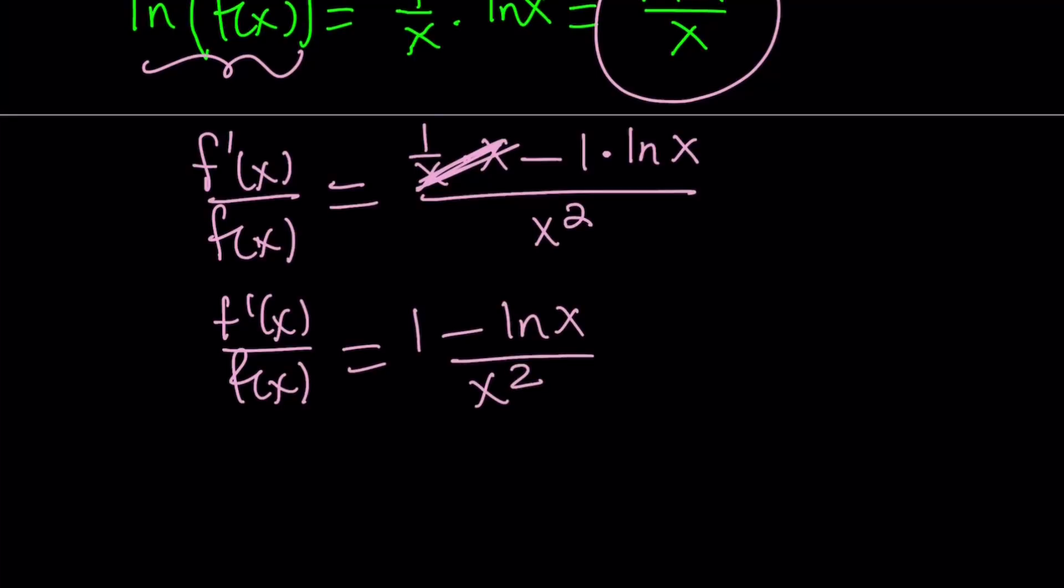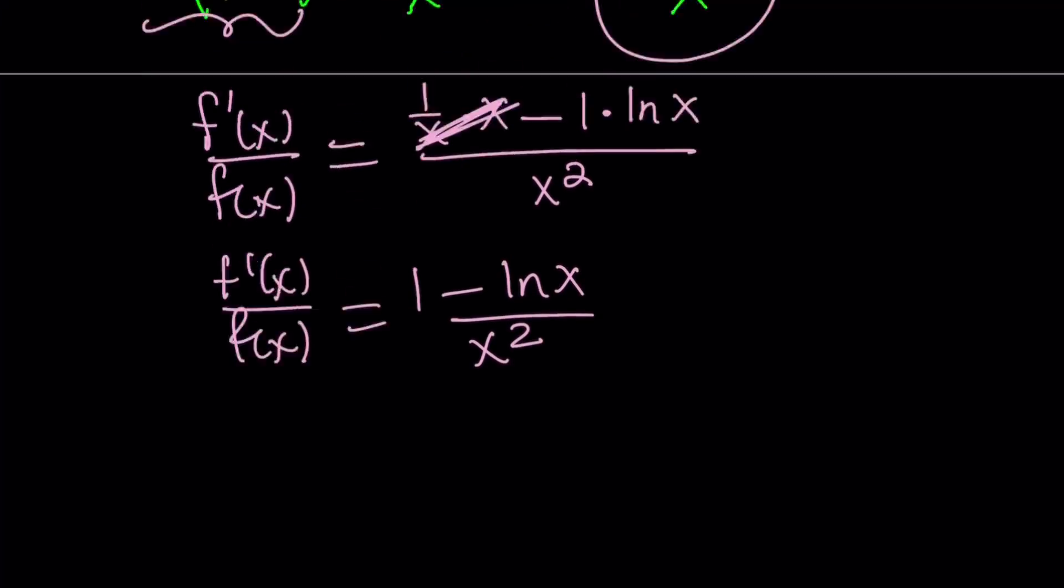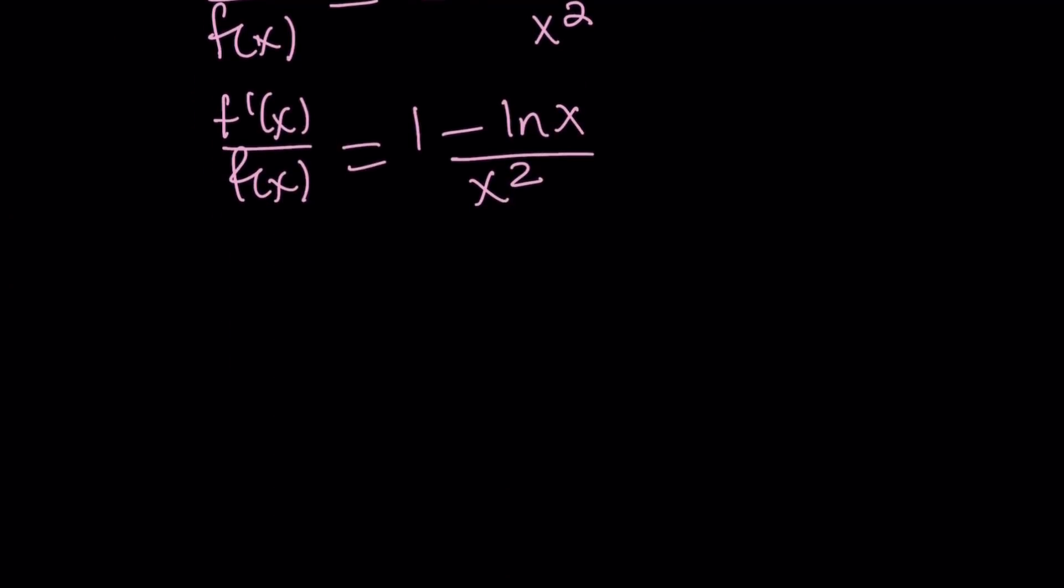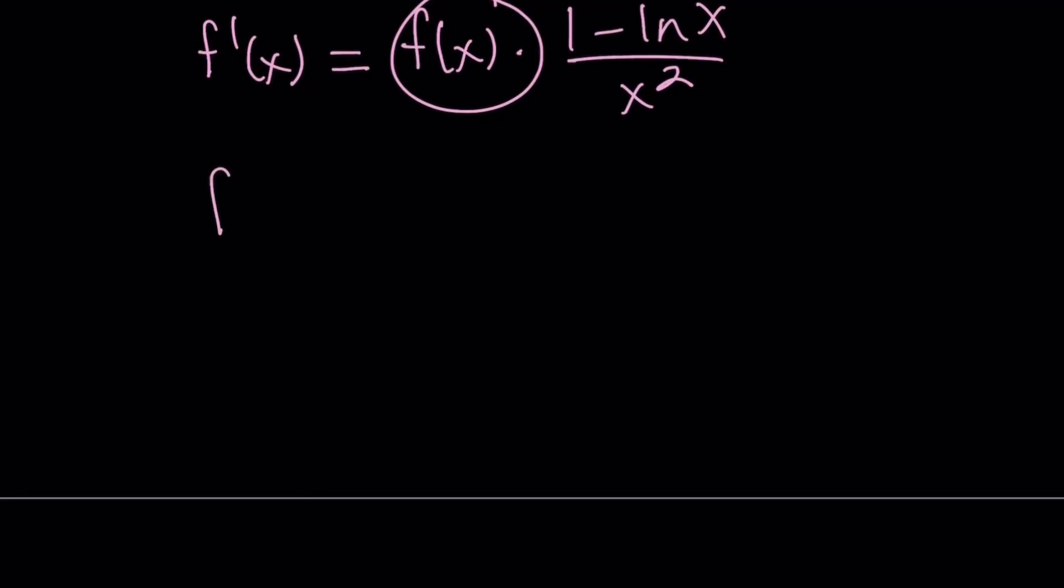So this gives us f prime of x over f of x equals 1 minus ln x over x squared. And obviously, I can multiply both sides by f of x. Consider the fact that f of x can never be 0, so it is okay to do. And when we do, f prime of x gives us f of x multiplied by 1 minus ln x over x squared.